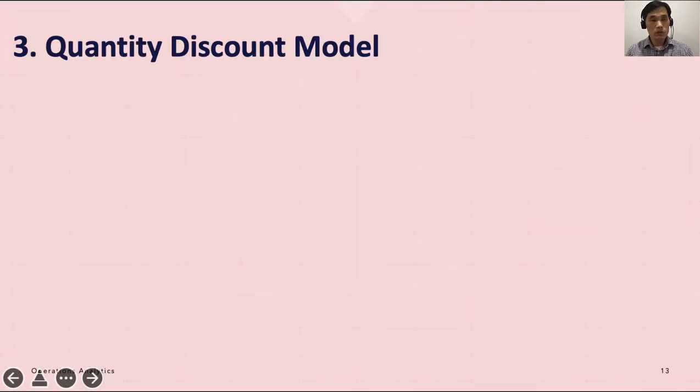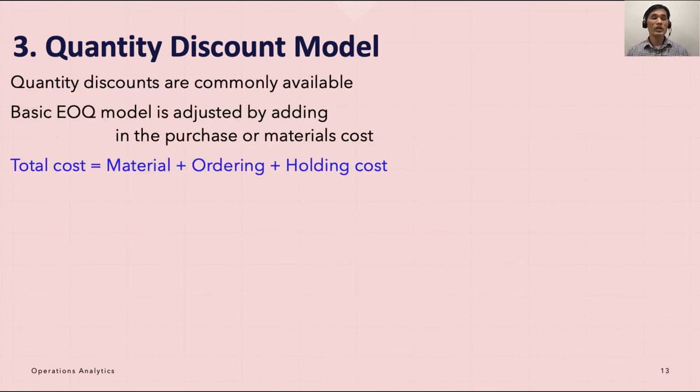The third model we want to look at is the quantity discount model. As you know, in reality you get discounts if you order a certain number of inventories. For example, you can buy ten textbooks at a time and get a discount of 10 percent.